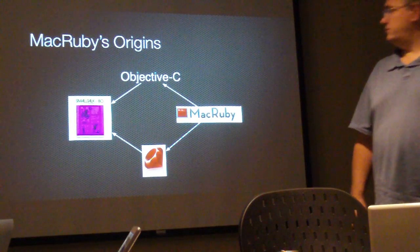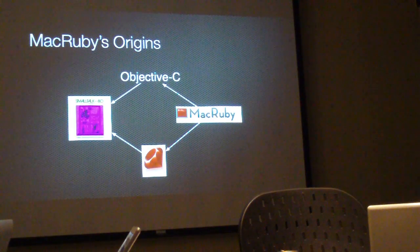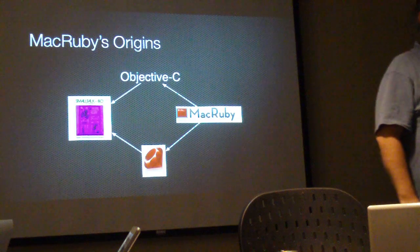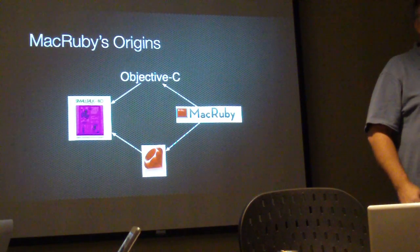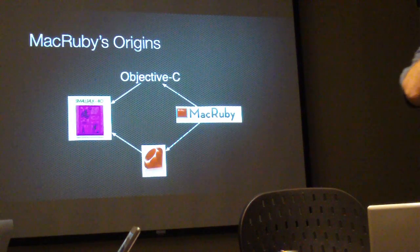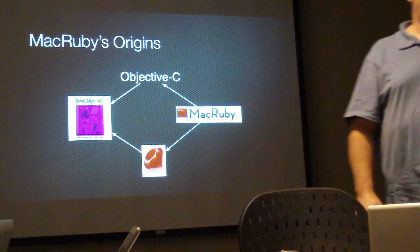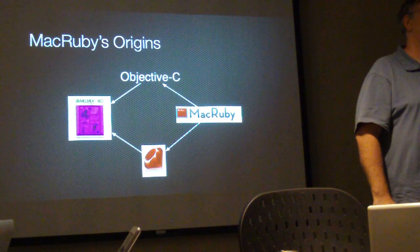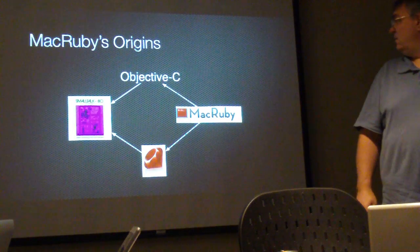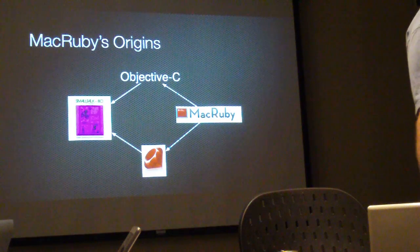MacRuby's origins are very similar to Ruby's origins in that they're both based on Smalltalk. But what they did is mix in Objective-C. So you get this cross between being able to use Ruby and do Smalltalk-style dynamic things — runtime lookups, runtime class definition — but you're also using the C-based architecture to call out to OS resources at a lower level.